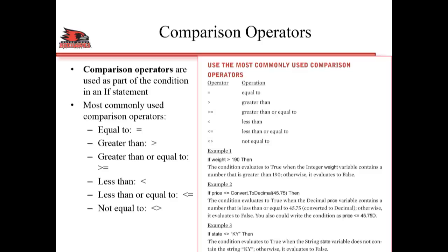When comparing strings, we have to be careful because the program does exactly what it's told. For example, if we check whether the variable 'state' is not equal to 'KY' (capital K, capital Y), this condition becomes true not only when the state is something different like Georgia, but also if you entered 'KY' followed by a space — because that trailing space makes it a different string.